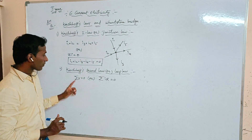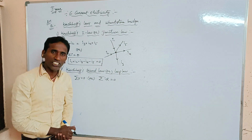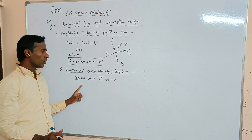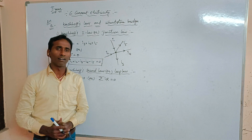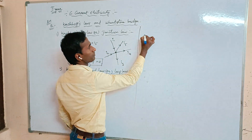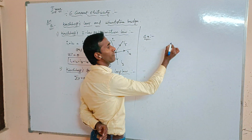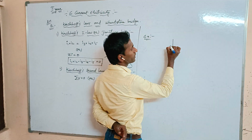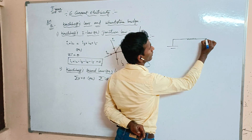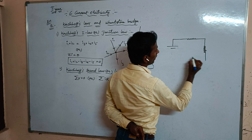Once again: Kirchhoff's Second Law means the algebraic sum of changes in total potential difference through any closed loop is equal to zero. For this law, let us consider a best example with a battery and three resistors r1, r2, and r3.